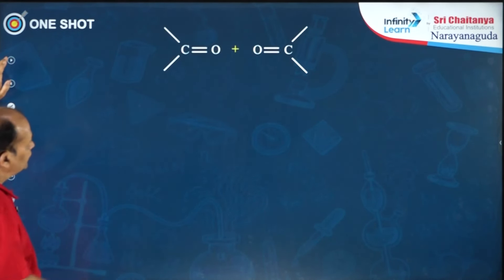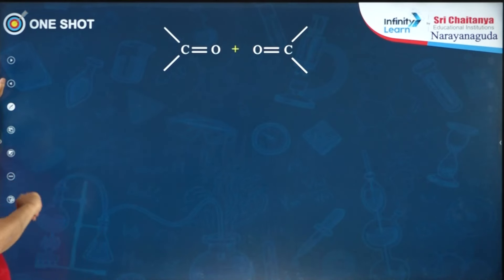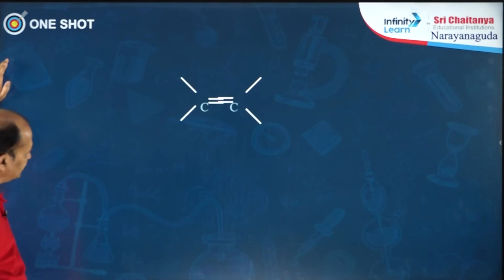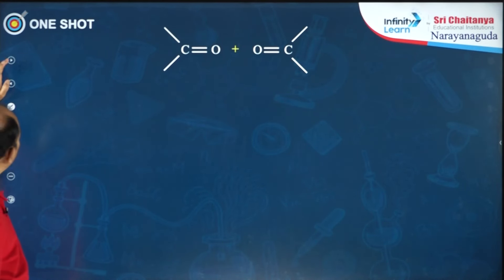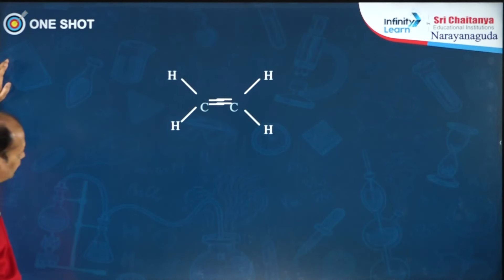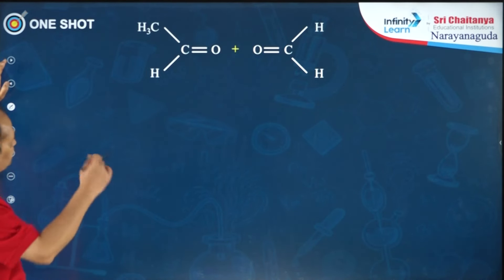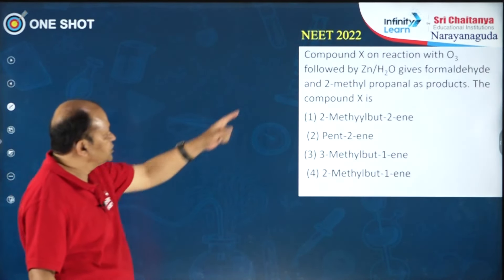In examinations, what they ask is: you get two carbonyl compounds by ozonolysis of an alkene X — what is X? Please understand this concept: from two molecules of formaldehyde, the starting alkene is ethylene. From acetaldehyde and formaldehyde, the starting alkene is propene. A question from NEET 2022: compound X on reaction with ozone followed by hydrolysis gave formaldehyde and 2-methylpropanal — what is compound X?